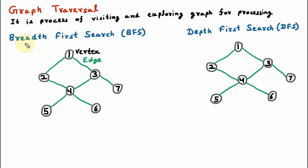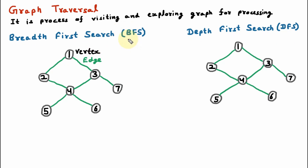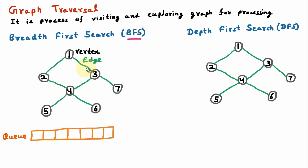There are two methods for graph traversal. First is Breadth First Search, which is also called BFS, and the second method is Depth First Search, which is also called DFS. Now we are understanding these two graph traversal methods one by one. First of all we are understanding BFS, which uses the queue data structure. A queue is FIFO — that means first in, first out — which means what comes in first will be processed first.